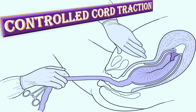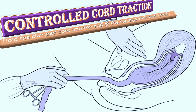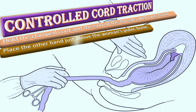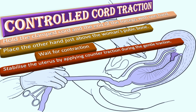Hold the clamped cord and the end of the forceps with one hand, and place the other hand just above the woman's pubic bone. Wait for the contraction, then stabilize the uterus by applying counter-traction during the gentle traction.